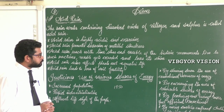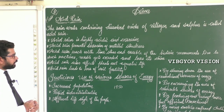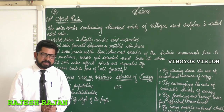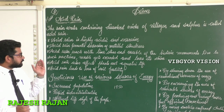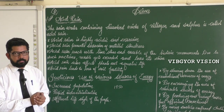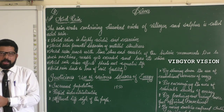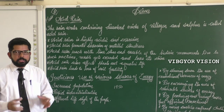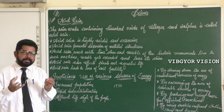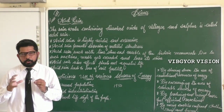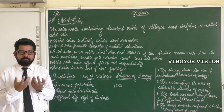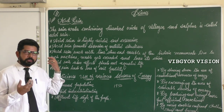Acid rain reacts with limestone and marble of historical monuments. Due to such reactions, marble gets corroded and loses its shine. Marble and limestone are made up of calcium carbonate, and the acids in acid rain react with them, destroying their beauty. For example, the beauty of the Taj Mahal has faded due to air pollution and acid rain.